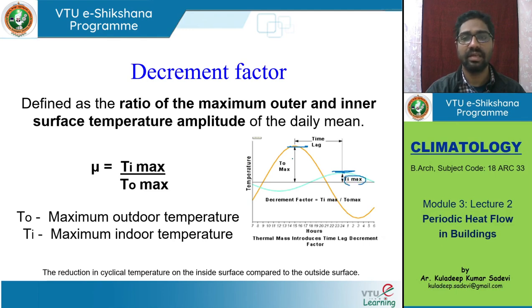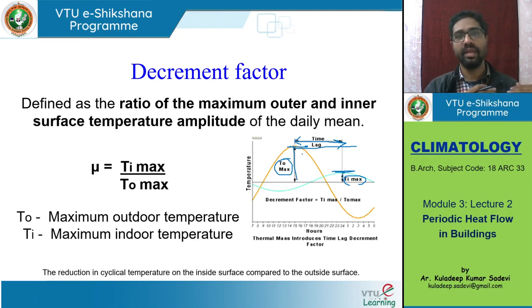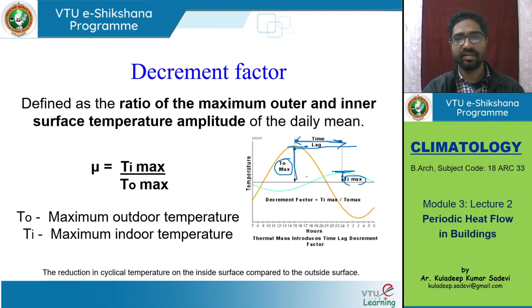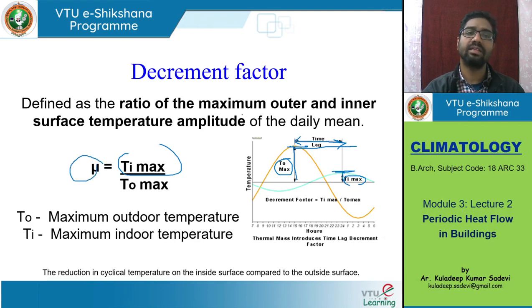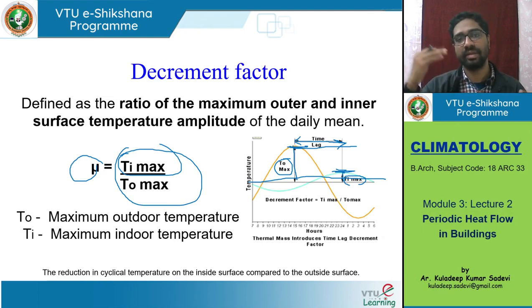T_i max is the indoor maximum temperature and T_o max is the outdoor maximum temperature. When we compare the amplitudes of these two waves — this is the amplitude of the outdoor wave and this is the amplitude of the indoor wave — if we check the ratio of the inner max to the outer max, that is what we call the decrement factor. It is the ratio of the maximum outer to maximum inner surface temperature amplitudes from the daily mean. There is a daily mean, an outer max, and an inner max, and the ratio of these is the decrement factor. Basically, decrement factor measures how much reduction there is in indoor temperatures compared to the outdoor maximum.